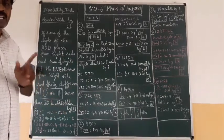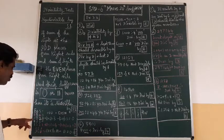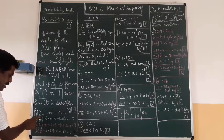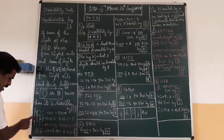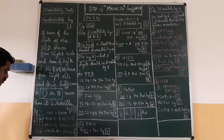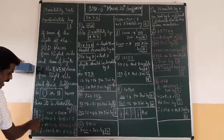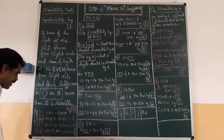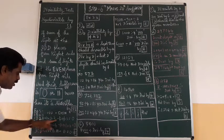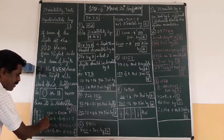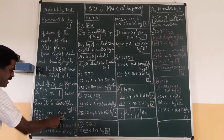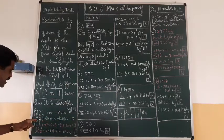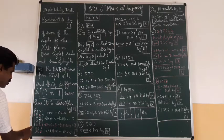Let's see an example: 1221. From the right, positions are: odd, even, odd, even. Odd place digits: 1 and 2 → 1 + 2 = 3. Even place digits: 2 and 1 → 2 + 1 = 3. Difference: 3 − 3 = 0. Since the result is zero, 1221 is divisible by eleven.